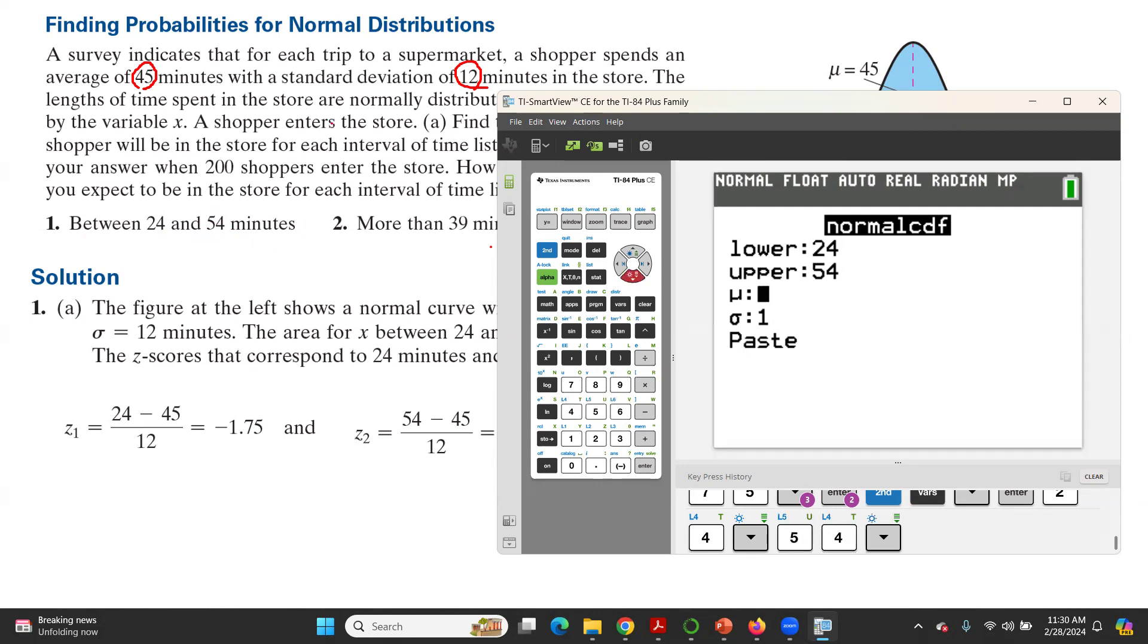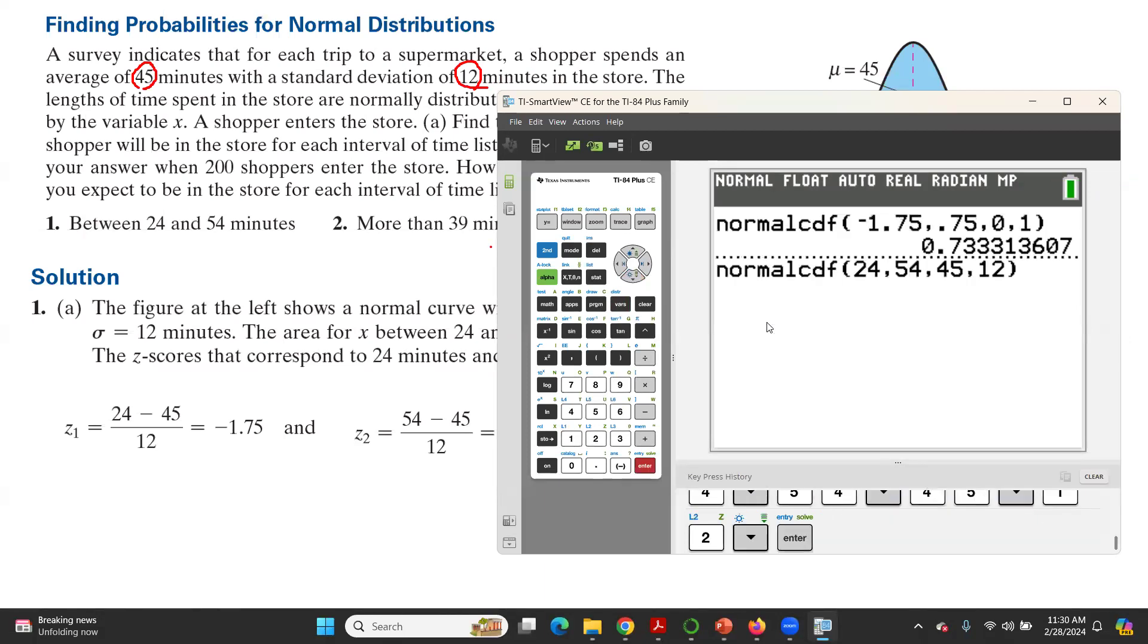Then mu, based off of the information, is 45, and the standard deviation, as you can see, is 12. And then hit enter. You get the exact same probability, everybody. It doesn't matter if you use z or if you use x.